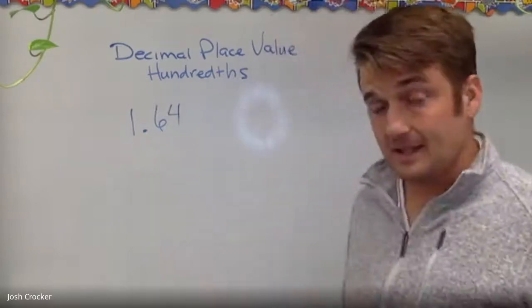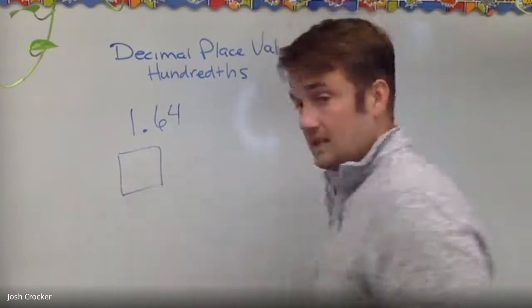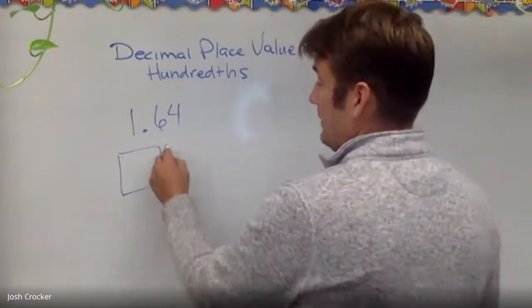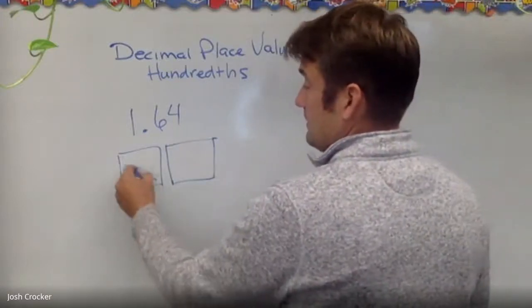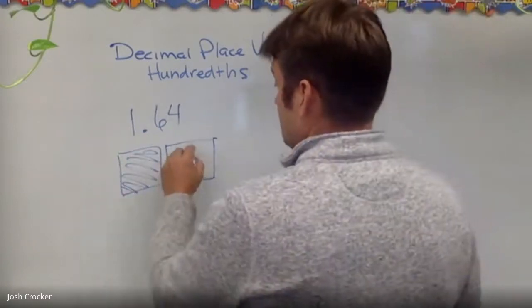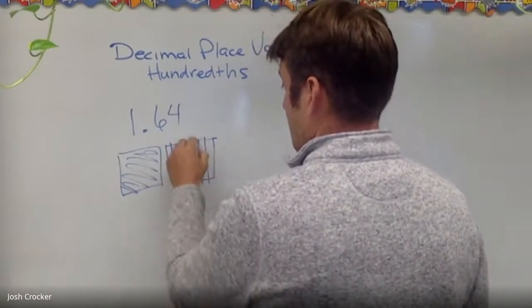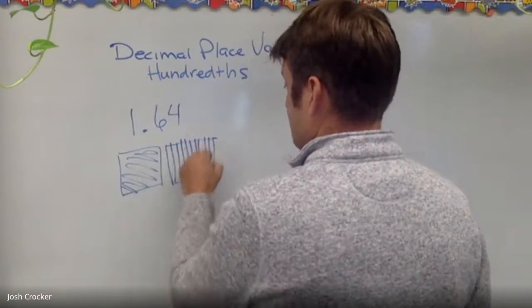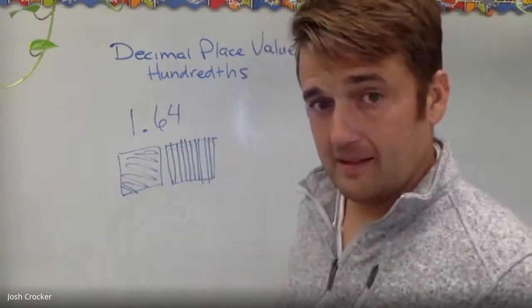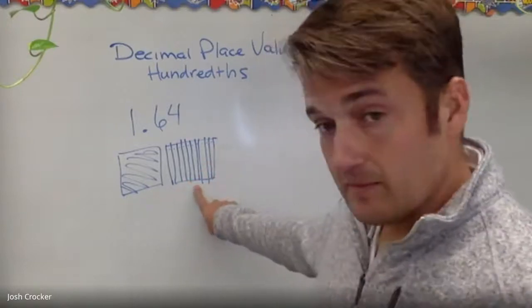So what this means is: we're going to pretend these slices are square. I have one whole slice and then the next slice — let's count ten rows. Okay, that's ten rows. So if I colored out to six, that would be six tenths. We talked about six tenths yesterday.